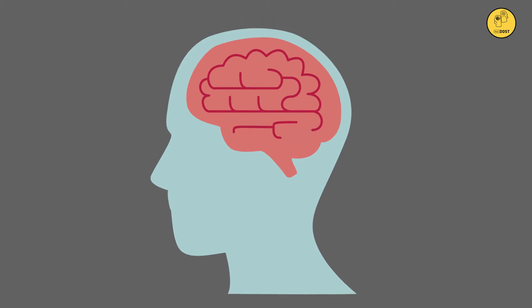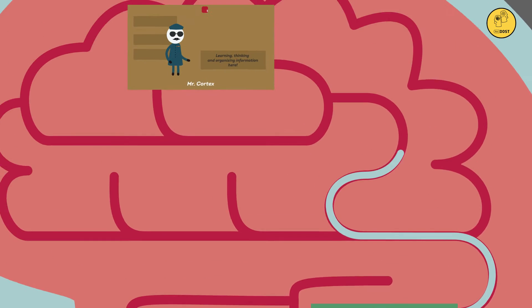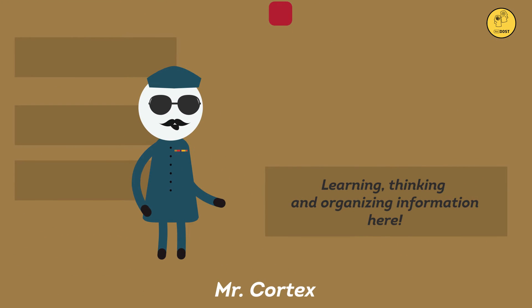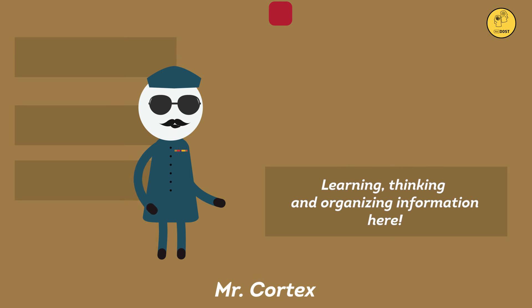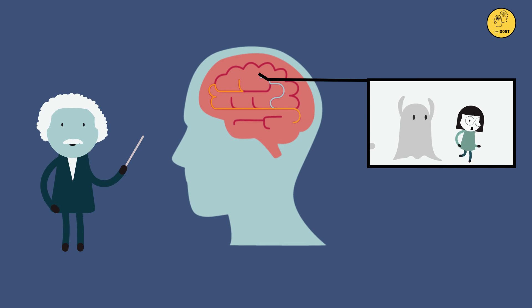During our sleep, just like in any government department, the junior assistant of our brain, Mr. Pons, starts sending the reports of our day's activities to his manager, Mr. Cortex, in the form of signals. However, due to poor network issues, these signals are hard to interpret. Thus, while trying to find meaning in these signals, Mr. Cortex starts forming stories like motion picture films, and we see them as dreams.